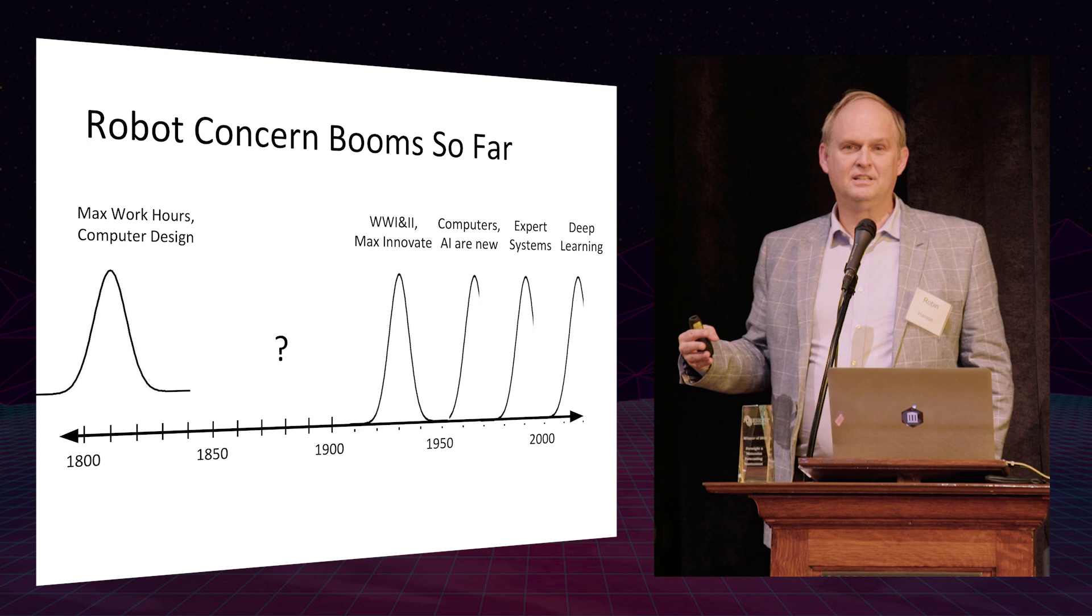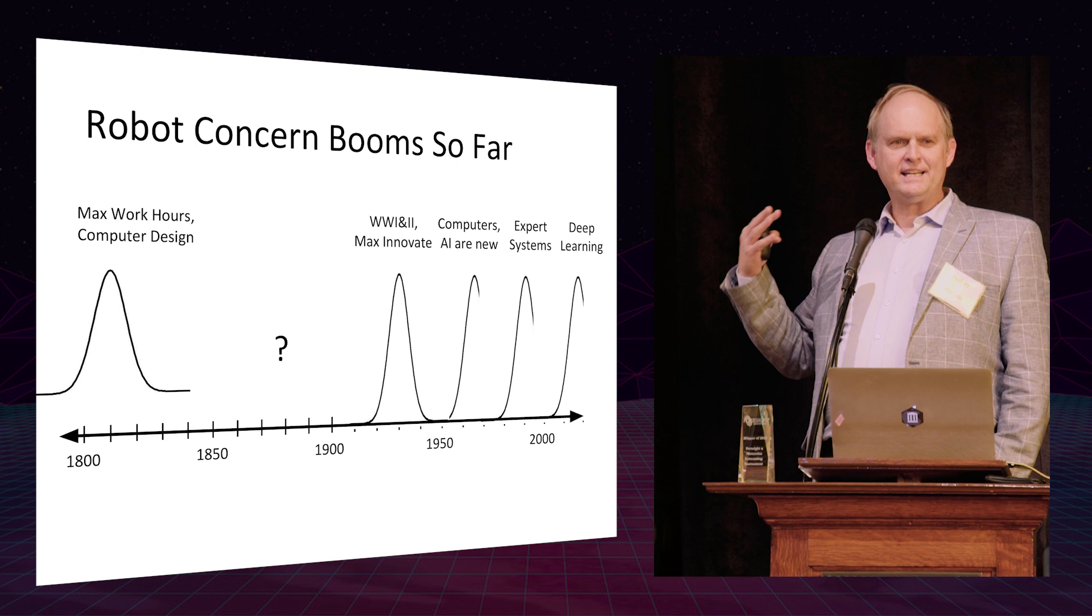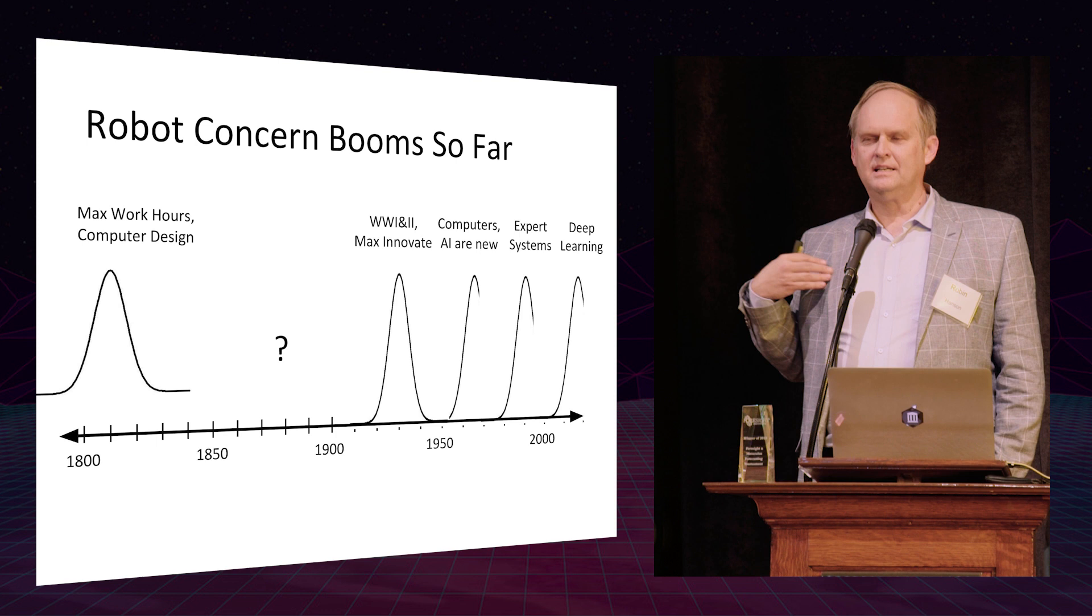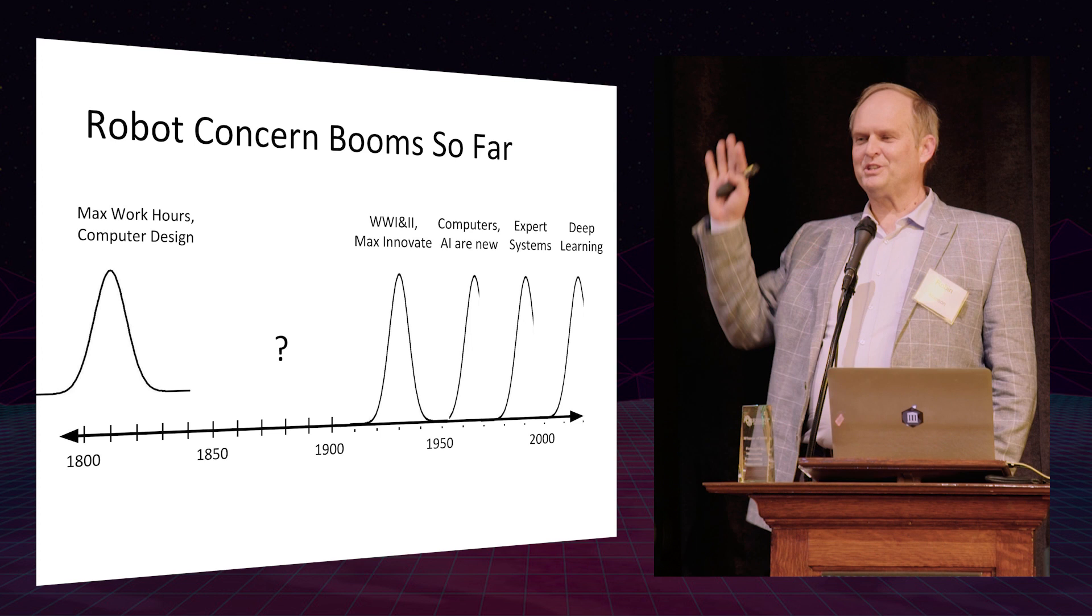If you ask what would you expect to see if this time were different, if we were about to suddenly actually replace a large fraction of the jobs with automation much more than in the past, we might expect to see a burst of investment, a burst in economic growth, a burst in people moving into those areas. We don't actually see that much of these things compared to previous. The closest thing we might have ever seen was the dot-com boom where the stock markets believed there was an enormous change coming and of course enormous change was coming but not quite at the rate they expected. And so a big question is, is this time different?